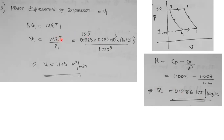Substituting T1 = 289 K and R = 0.286 kJ/kg·K (= 286 J/kg·K), and carefully handling units, V1 = mRT1/P1 ≈ 11.15 m³/min.